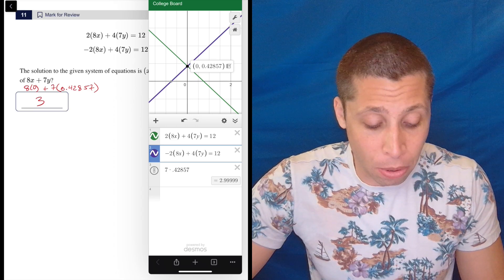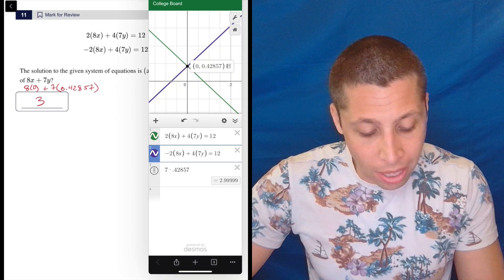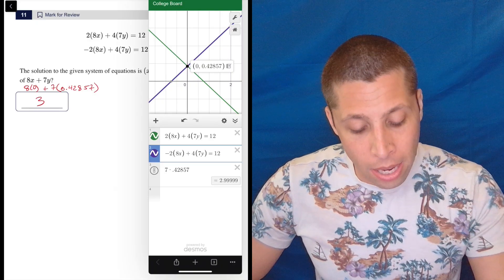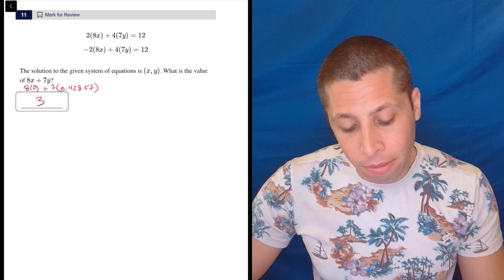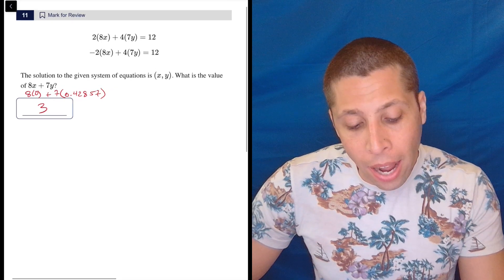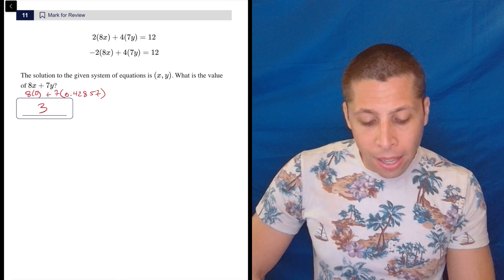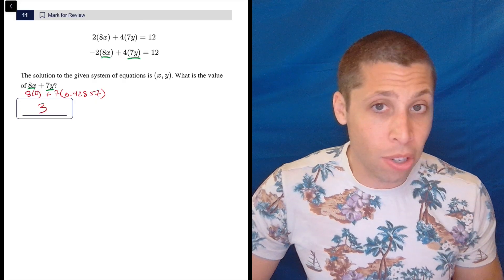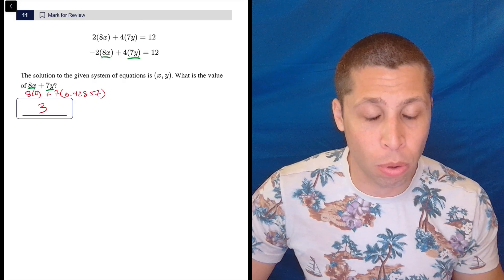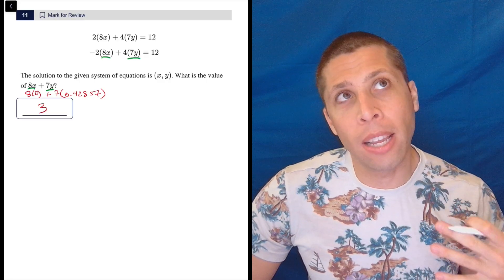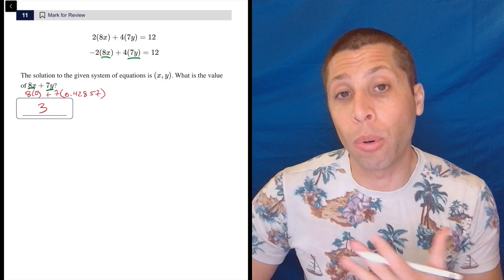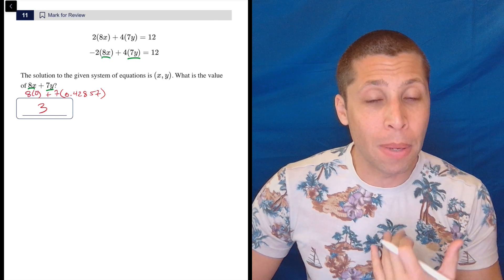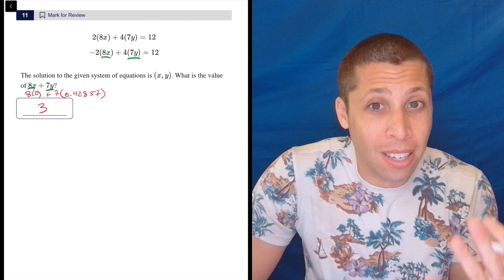I would definitely do this with Desmos, I think, because even though it's got a little bit of a question mark for a second there, it kind of resolves itself. Now, to do this with the algebra isn't so bad either. And you can kind of tell, like, wait a minute, 8x, 7y. Look, I mean, these equations have that in there. There must be some sort of shortcut. But I wonder if people are going to spend a long time looking for that shortcut and not ever really finding it, because it is kind of still hard to see.